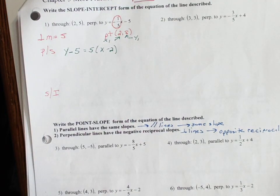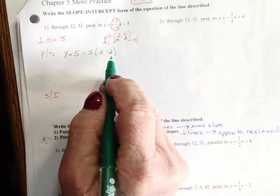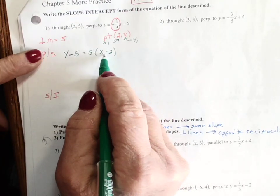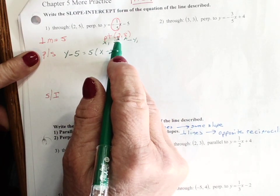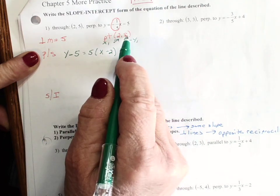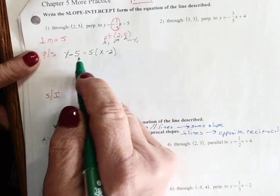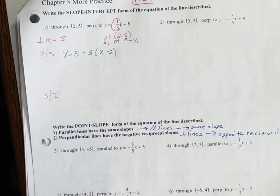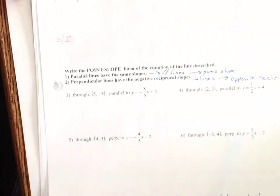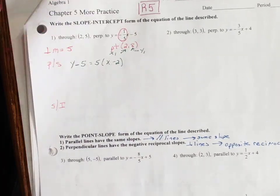So notice that this is the x coordinate, matches up with this, this is the y coordinate, matches up with this. And the ordered pair and what it's in the equation, they are opposite signs. So now all we have to do is a little algebra to get this into slope intercept.